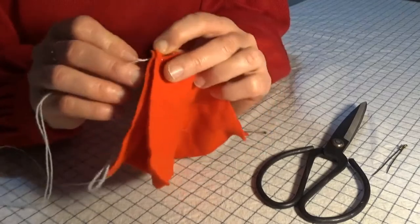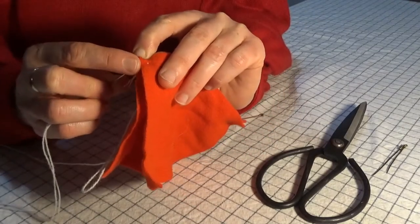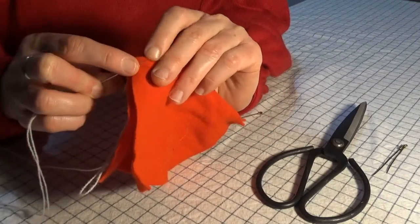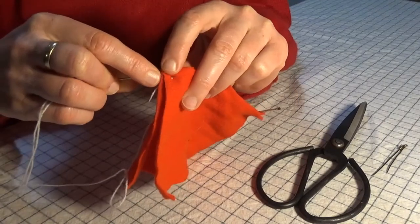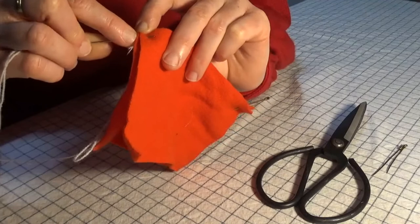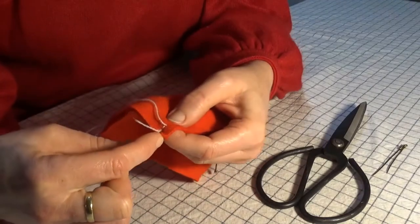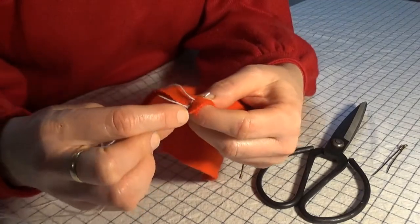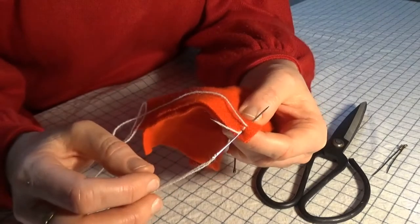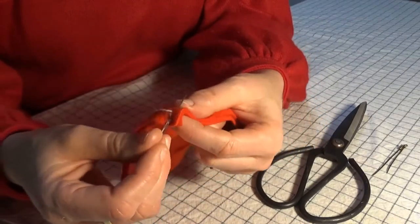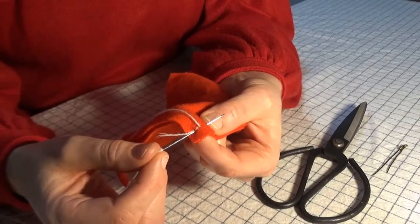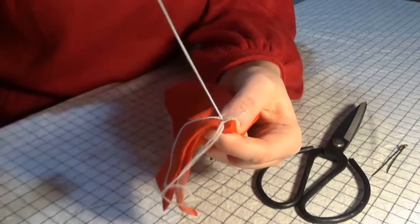Then, keeping the needle in the work, I find a position in the forward direction, but twice the distance of the first little back stitch. I pass the needle from the back to the front, like that.